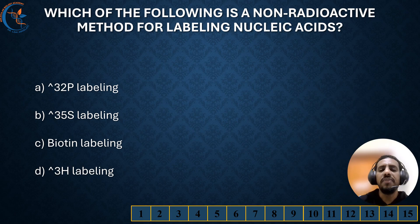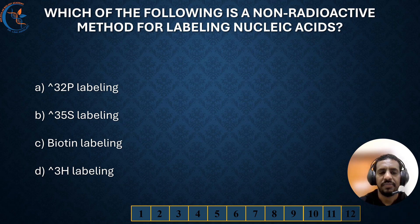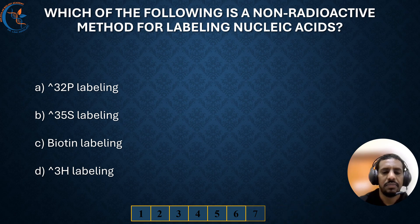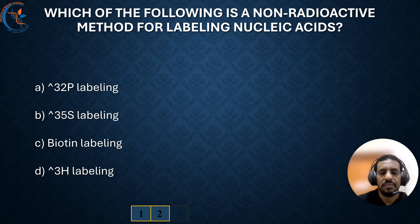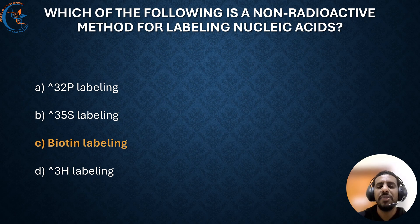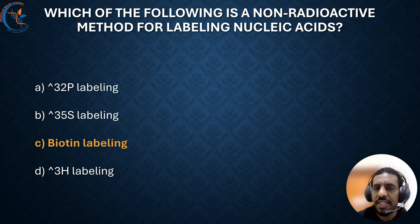Which of the following is a non-radioactive method for labeling nucleic acids? The correct answer is biotin labeling. Biotin labeling is a non-radioactive method for labeling nucleic acids, allowing for detection using streptavidin-conjugated enzymes or fluorescent dyes.